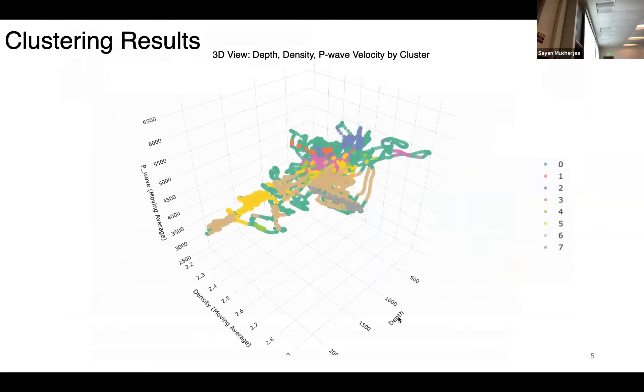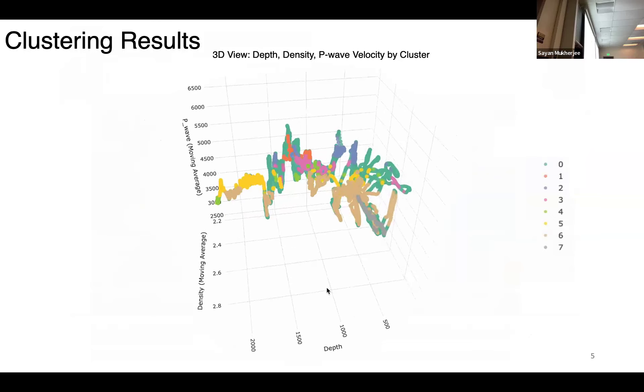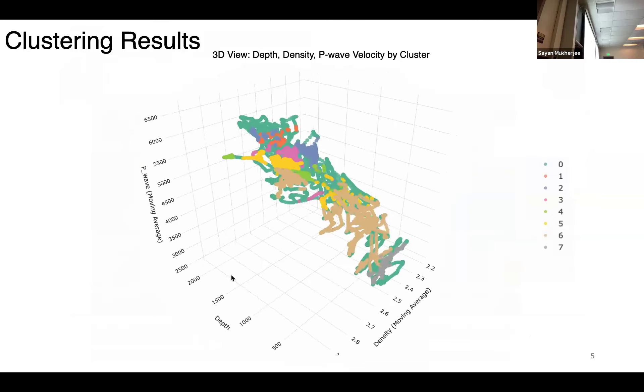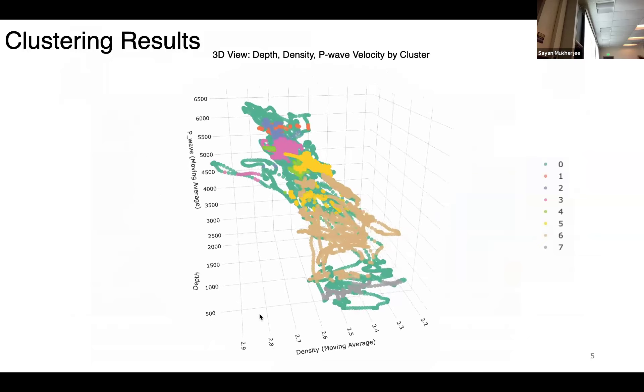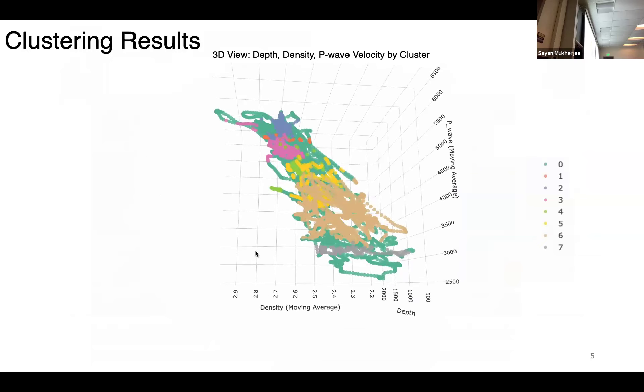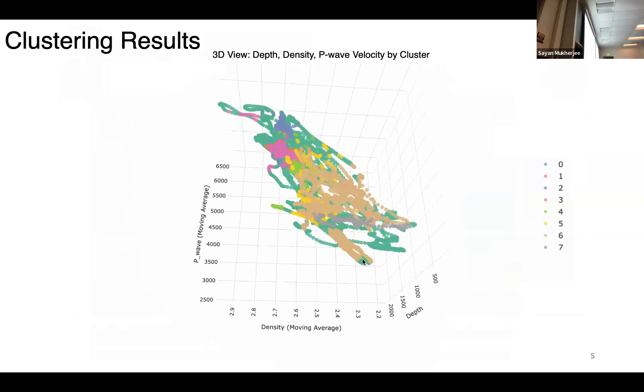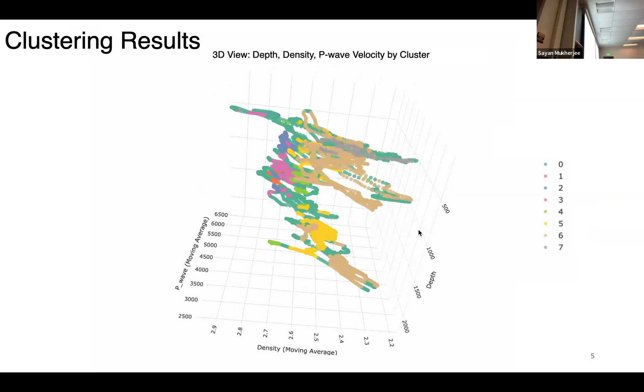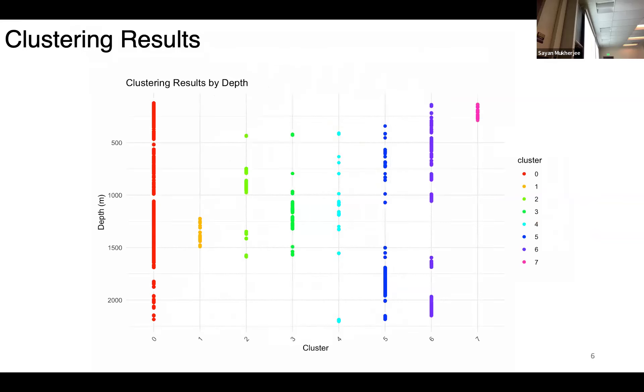Moving on, this is our geological clustering method. This is our interpretive diagram. We see depth, density, and P wave moving average, and we get seven clusters here. To make this 3D diagram more simple, we then plot this into a depth versus clustering.